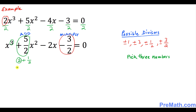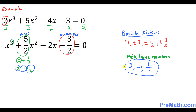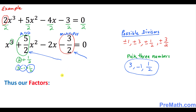Since we are looking for 3 numbers, I'm going to tweak the 2 and write it as 3 minus 1, then plus 1 over 2. That means we've figured out our three numbers: 3, negative 1, and positive 1 over 2. If you add them, that gives you 5 over 2, and if you multiply them, that gives you negative 3 over 2. So our three numbers are 3, negative 1, and 1 over 2.